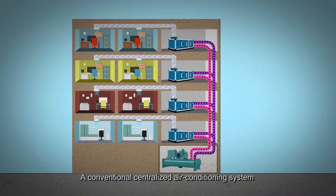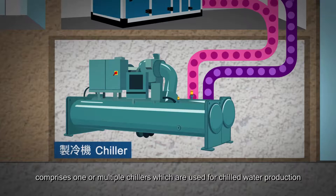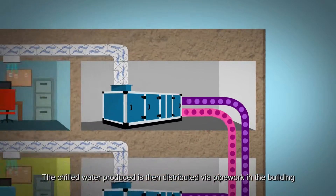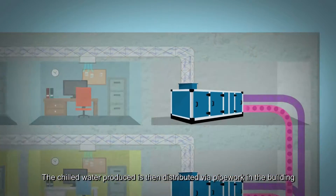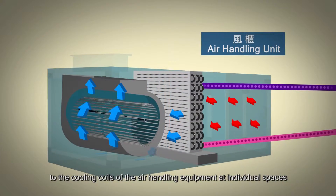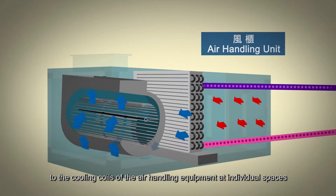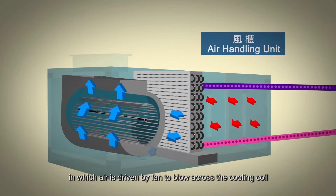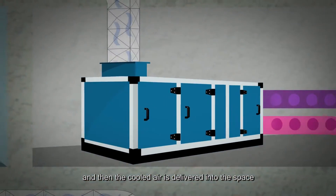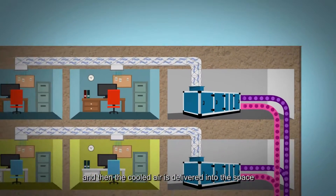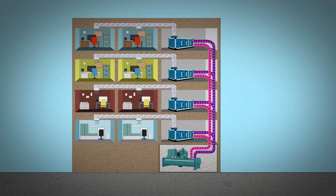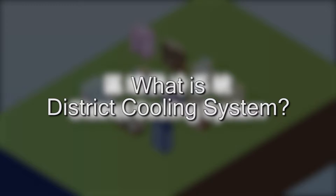A conventional centralized air conditioning system comprises one or multiple chillers, which are used for chilled water production. The chilled water produced is then distributed via pipework in the building to the cooling coils of the air handling equipment at individual spaces, in which air is driven by a fan to blow across the cooling coil, and then the cooled air is delivered into the space to achieve overall air conditioning for the building.